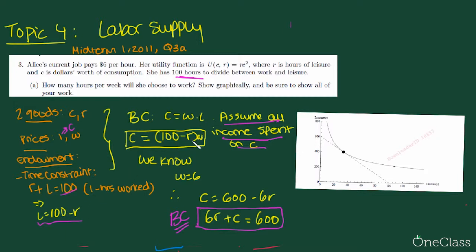We know we want to write our budget constraint in terms of R, so we substitute in 100 minus R for L times W, and that equals our consumption. We're also given that the wage equals 6. So now we can substitute in 6 for W, and we have C equals 600 minus 6R. Rearranging, we have 6 times R plus C equals 600. And 600 is the maximum amount of income we can make if we do not consume any leisure at all.